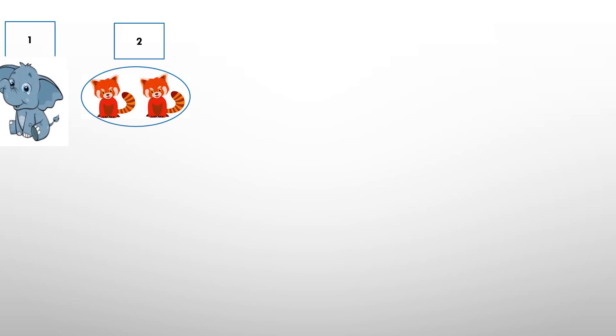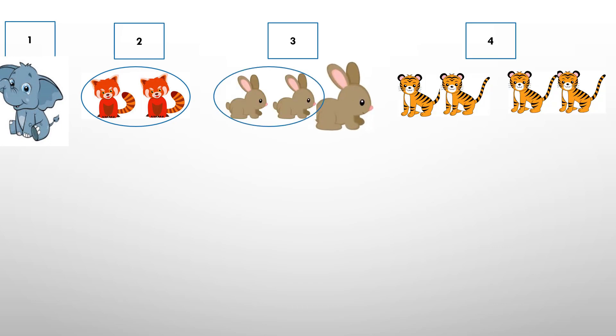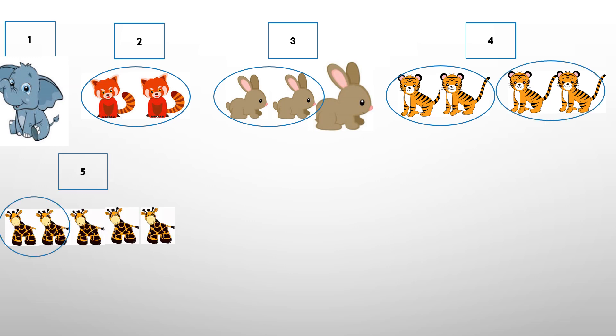When we look at one, the elephant can't be grouped because it doesn't have a pair. But when we look at two, the raccoons can be grouped because there are two of them. And for three, there's one bunny left out and for four, there are no tigers left out.